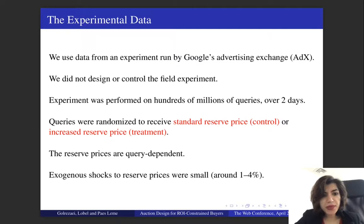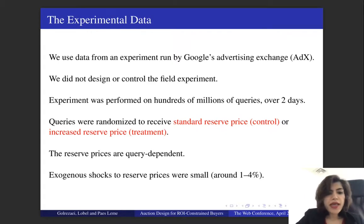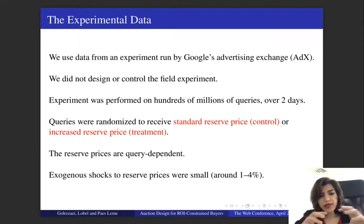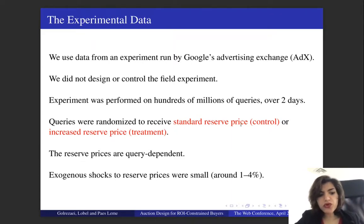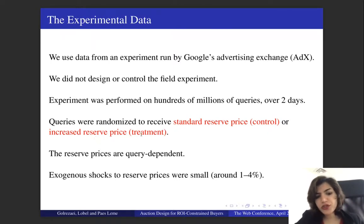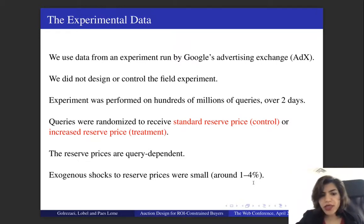We wanted to look at experimental data from Google to confirm our theoretical results. In that dataset, we could look at a field experiment where queries were randomized to receive either a standard reserve price, which was the control group, or a slightly higher reserve price, which was the treatment group — around 1 to 4% higher. That wasn't something we designed; it was an experiment Google was running. We looked at the results to verify our theoretical findings.